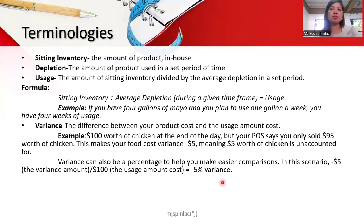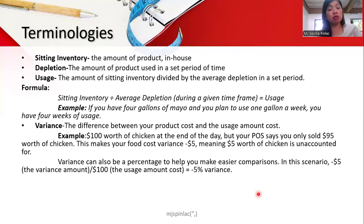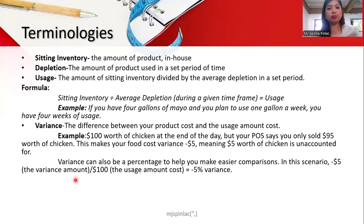If the variance is positive, it is also not good — a positive variance may occur when the wrong products are punched into the POS, resulting in overages where the right products are not accounted for. To get the variance percentage, divide the variance amount by the usage amount cost. In this example, negative 5 dollars divided by 100 gives a negative 5% variance.